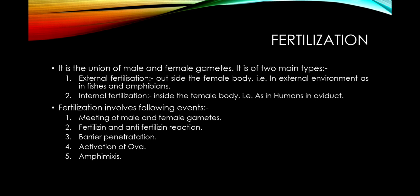The next event is fertilization — the most important and crucial step in sexual reproduction. It is the union of male and female gametes and is of two main types depending on where it takes place. If fertilization takes place outside the female body, it is called external fertilization — for example, in fishes and amphibia, where it occurs in water. If it takes place inside the female body, it is called internal fertilization, as in the case of humans.